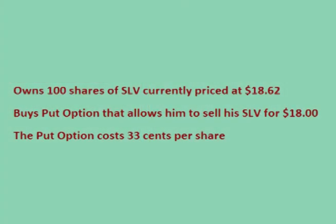The trader had 100 shares of stock, currently priced at $18.62 per share, worth $1,862 total. He buys a put option for $33 total, locking in the right to sell that stock for $18 a share anytime between when he purchased the option and when it expires in a month, should the price drop. So for $33, he has locked in the right to sell his SLV for $18, effectively placing a floor on the amount he can lose.